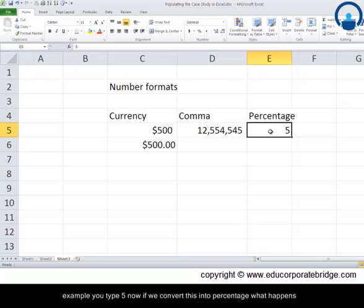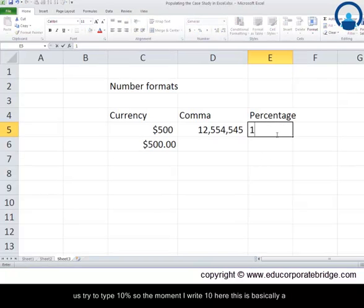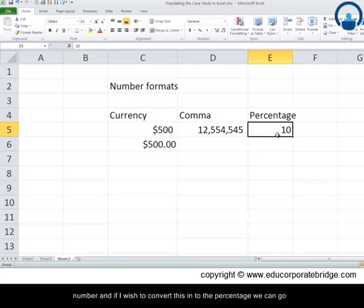Say for example, if we type 5, now if we convert this into percentage, what happens here is this comes out to be 500%. Now what is this implying? So let us try to type 10%. So the moment I write 10 here, this is basically a number.